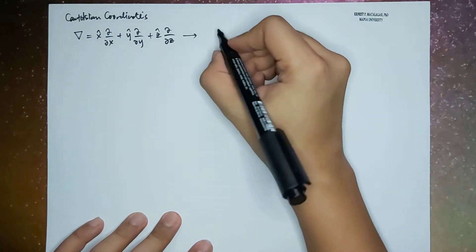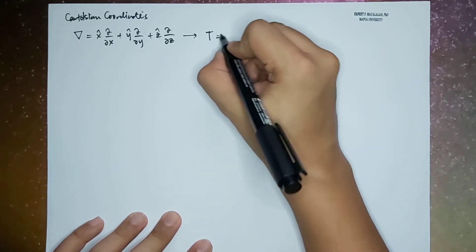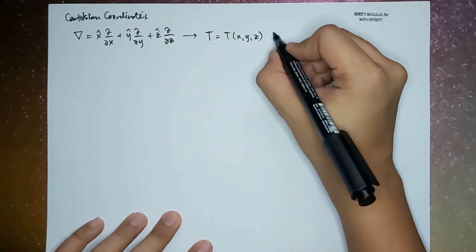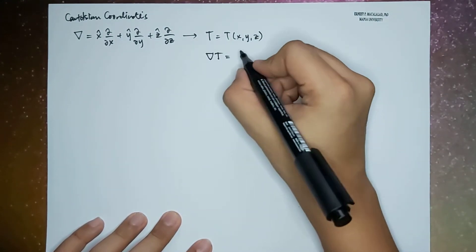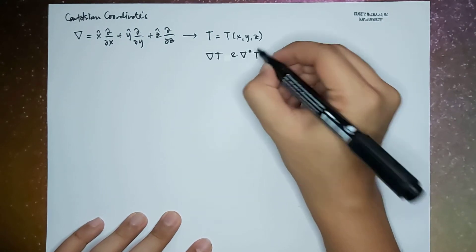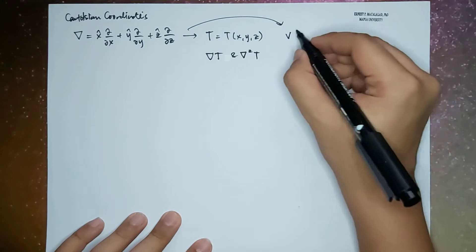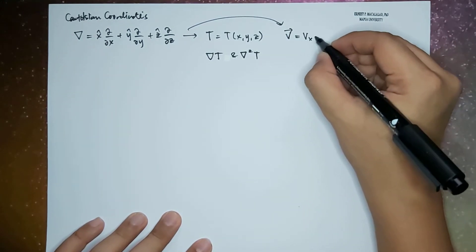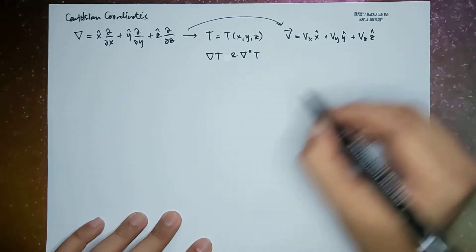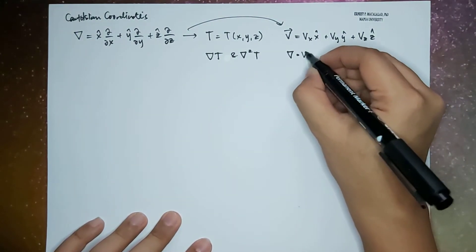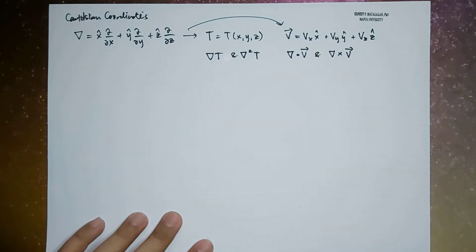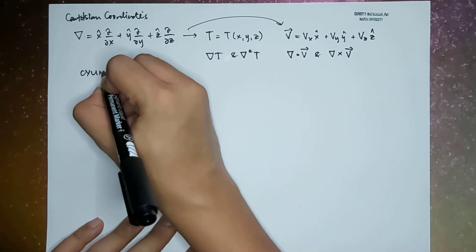From here, if we apply that to a scalar potential t which is a function of x, y, and z, we define the gradient of t, as well as the Laplacian of t. If we apply this to a vector field v which has x, y, and z components, we can get the divergence of v and the curl of v.